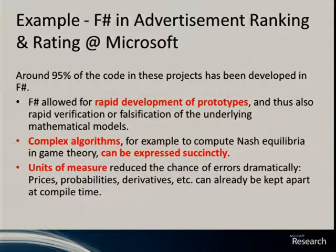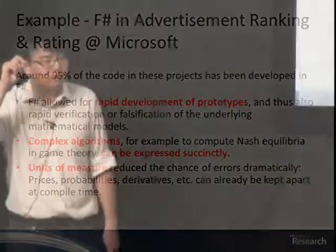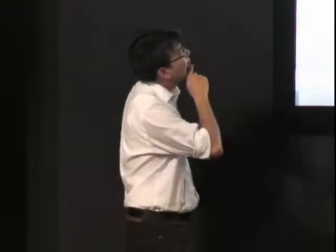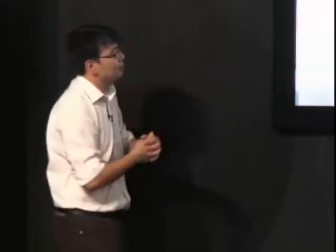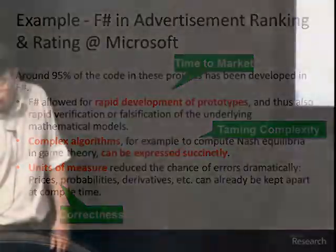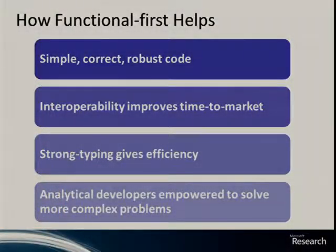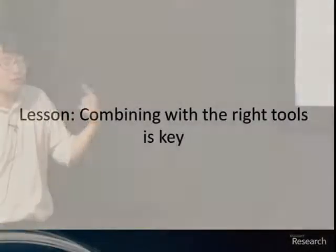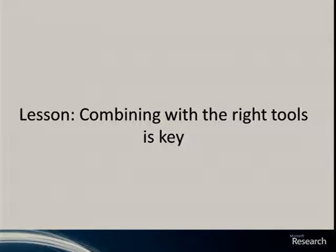In the lab here, we have a team that actually works for Bing, and does the ad ranking. So, this helps with the auctioning of ads. And so, most of their code is actually written in F-sharp. And, again, they just find it useful for prototyping. So, again, it's just another example of where this kind of functional approach works really nicely.